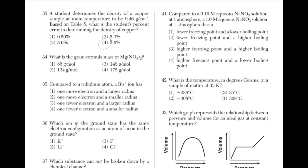What is the gram formula mass of Mg(NO3)2? To determine the gram formula mass, look at the periodic table for the atomic mass of each element. Mg has an atomic mass of 24u. N has an atomic mass of 14u, but there are two N atoms, so that's 28u. O has an atomic mass of 16u, but there are six atoms of O, so that is 96u. 96 plus 28 plus 24 equals 148 grams per mole — answer choice 3.